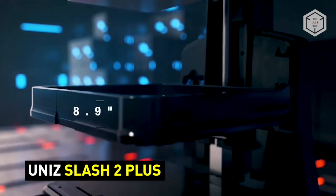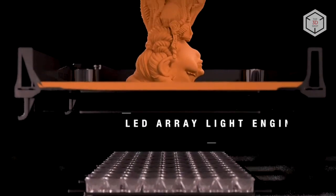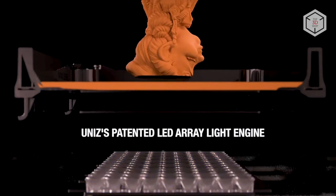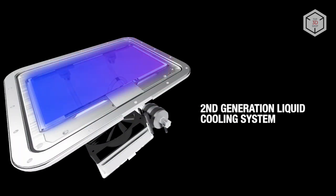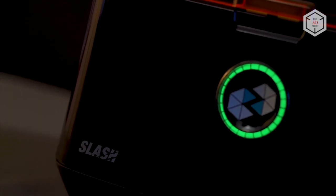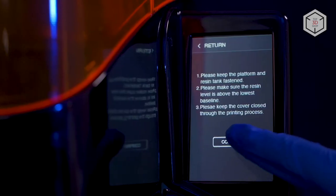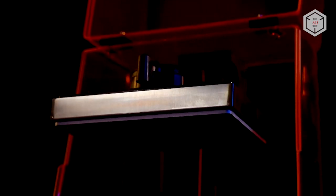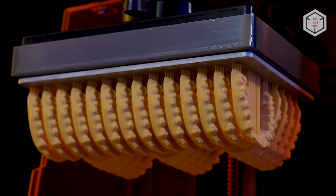The Unis Slash 2 Plus is a professional device based on LCD technology. Due to the immensely high speed and exceptional print quality with the minimum layer height of just 10 microns, the Slash 2 Plus is widely used in dentistry and jewelry production as these are the industries where print accuracy and high level of detail as well as speed are of major importance. The build volume of the device is 192 by 120 by 200 millimeters and its 8.9 inch 4k monochrome screen alongside the dedicated LED array provides a uniform light exposure over the entire print area thus providing dimensional accuracy of the part.